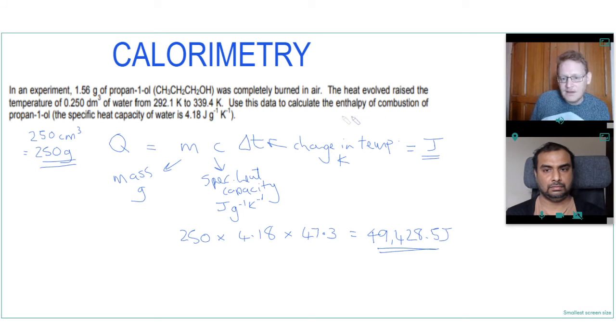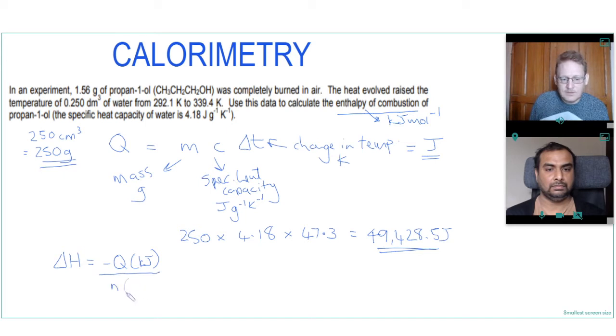But we've been asked to calculate not the energy given out but the enthalpy of combustion, and we know enthalpy change is kilojoules per mole. So our enthalpy change can be written as minus Q in kilojoules divided by the number of moles. And I actually just remember this as minus the kilojoules over the moles.